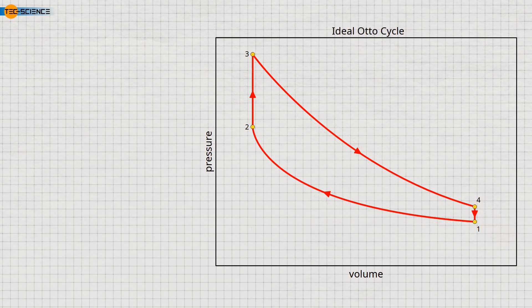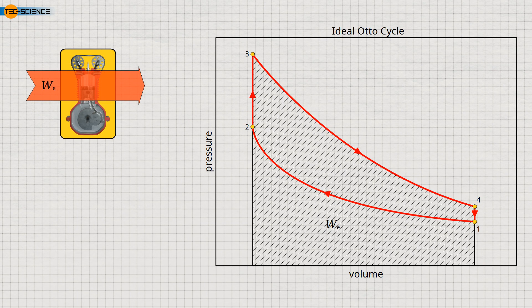Now let us take a closer look at the changes in state from an energy point of view. The expansion work done by the gas as it expands and transfers energy to the crankshaft is shown in the diagram as the area under the expansion curve. However, this is not the actual usable work done by the engine — part of this expansion work must be saved and then used later for compression. The energy required to do this comes primarily from the flywheels attached to the crankshaft, which store some of the expansion work as rotational energy to be used in the next cycle to compress the gas.